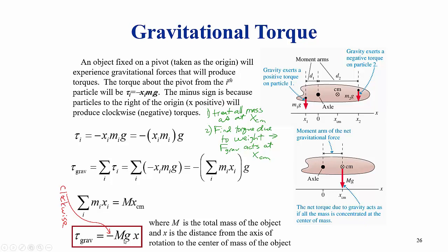In situations where the force of gravity is not perpendicular to the r vector, you would need to find the components. But here, since all of the force is perpendicular to the r vector, the torque is that gravitational force, mg, times that perpendicular distance, x.